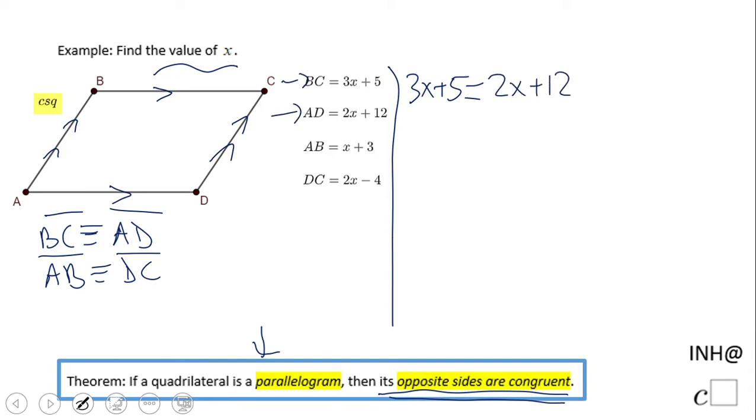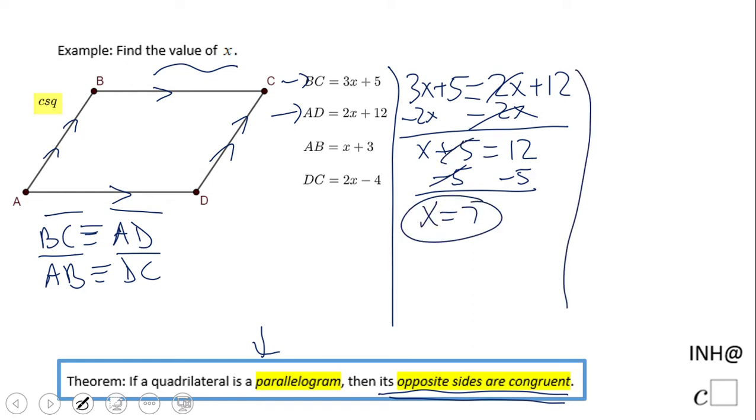We're going to solve for x. It's very fast here. I personally will subtract 2x and then I will subtract 5 on both sides and we get the value of x equals 7. If you notice we have a second statement here: AB congruent to DC.